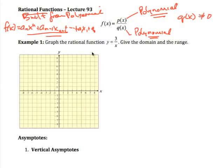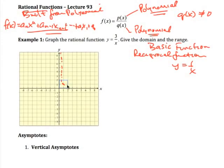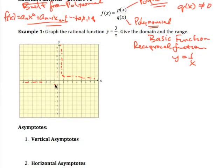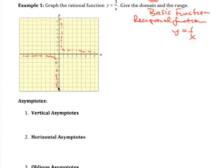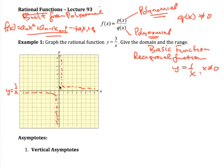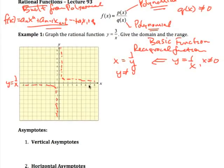We'll begin by graphing a very simple rational function. One of our basic functions is the reciprocal function y = 1/x. Notice that x cannot equal zero here, so the y-axis acts like a brick wall the graph can't pass through. Similarly, y can't be zero either, because rearranging gives x = 1/y, so the x-axis is also a wall the graph must stay away from.